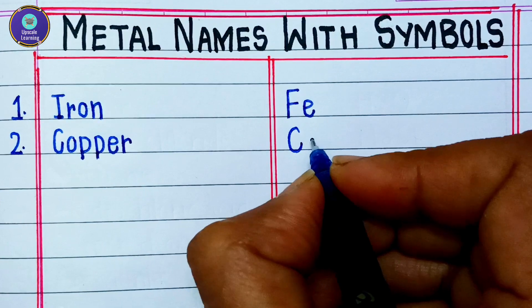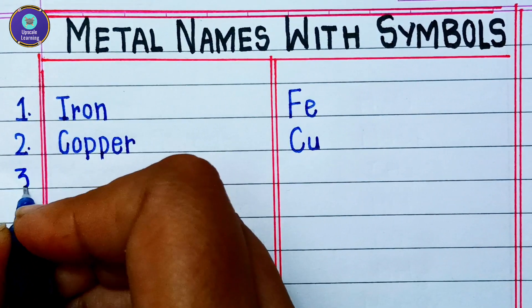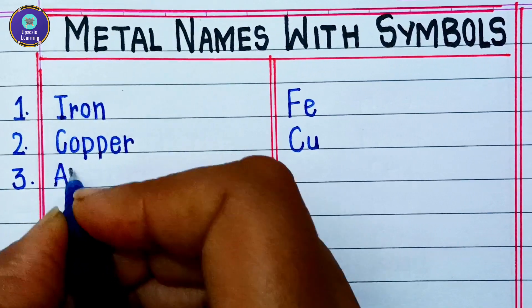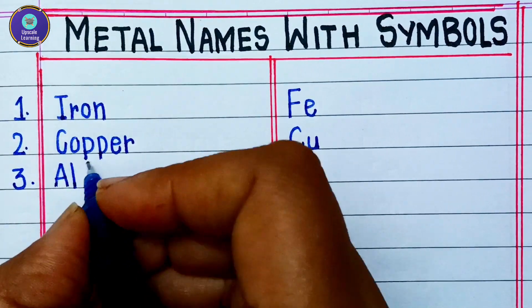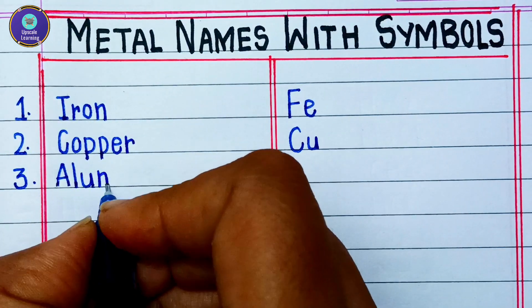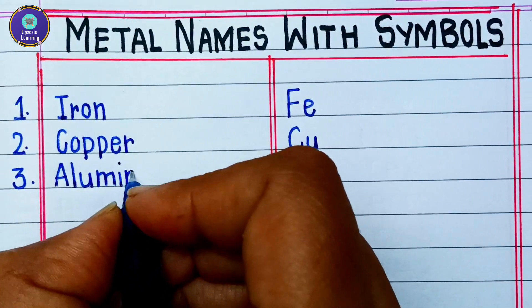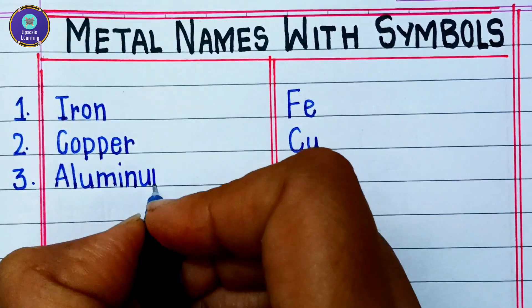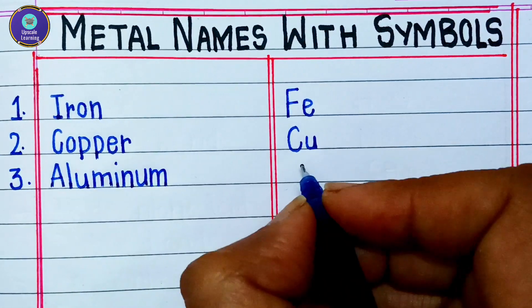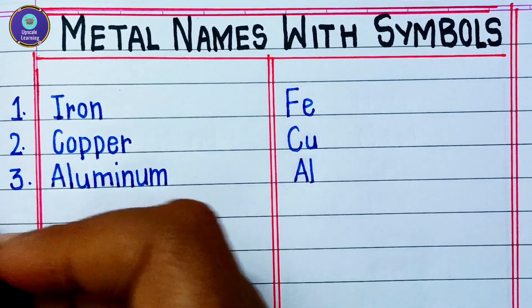The symbol for copper is Cu. Third is aluminum — A, L, U, M, I, N, U, M — aluminum, and Al is its symbol.